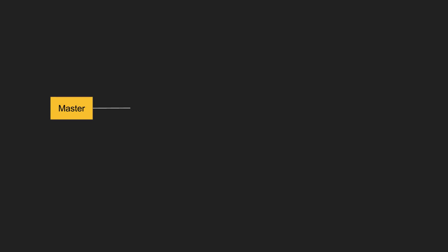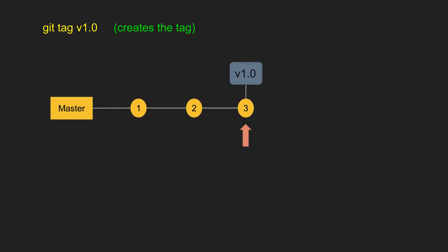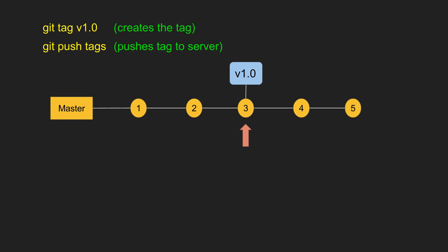Let us now review what we have done with a diagram. I checked out my master branch. Each circle with a number represents a commit — commit 0.1, 0.2, and 0.3. At commit 3, if the repository is stable or I want a backup, I say 'git tag v1.0' to create a tag and then push it to remote. I continue making changes — commit 4, commit 5 — and at that point I create tag v1.1.